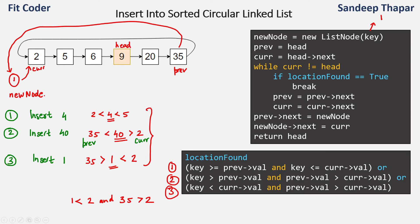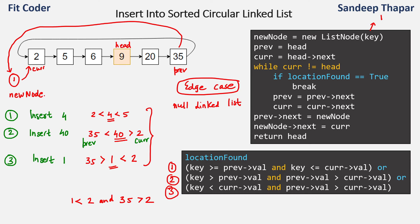There were 3 separate scenarios to handle for inserting a node in the sorted circular linked list, and by checking these 3 conditions we find the appropriate location for the key. There is also one edge scenario: when the linked list is null. If the linked list is null we simply insert a new node. For example, inserting node 2 — next of 2 will point to itself. So if head equals null, just return the new node after pointing the new node to itself.